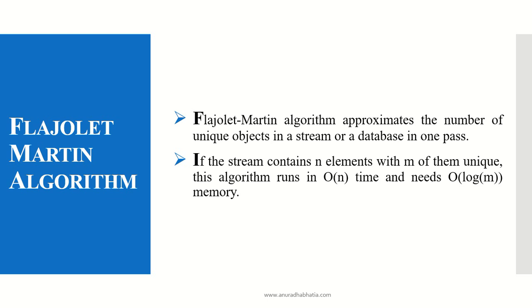Flajolet-Martin algorithm approximates the number of unique objects in a stream or a database in one pass. Unique stands for finding the distinct elements from the dataset or input stream in a single pass. If the stream contains n elements with m of them unique, this algorithm runs in O(n) time and needs O(log m) memory. This is the memory utilization for this FM algorithm.